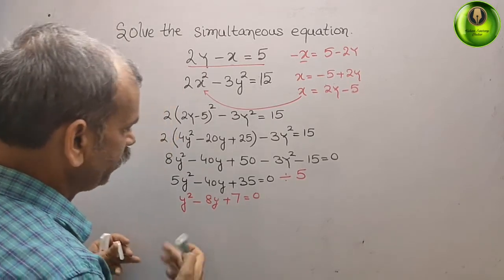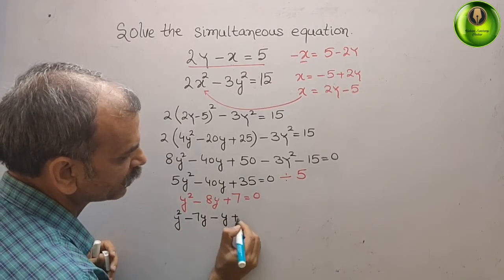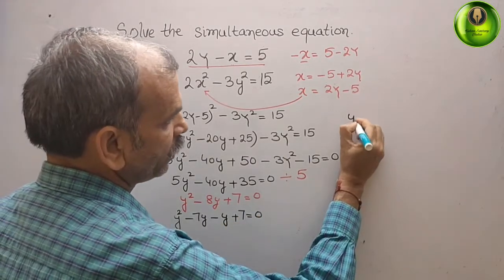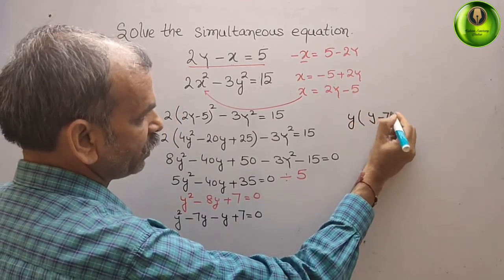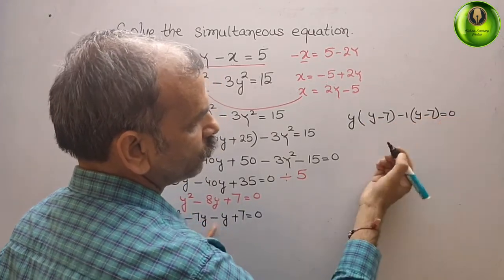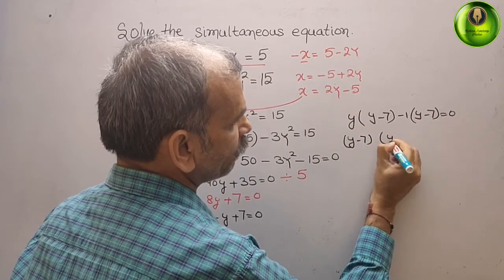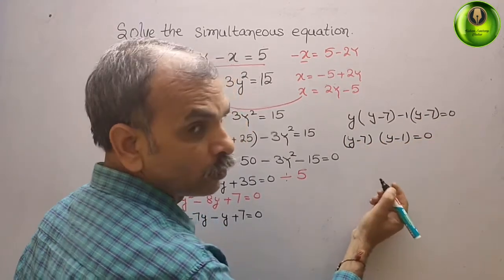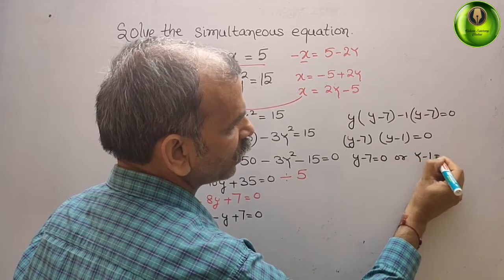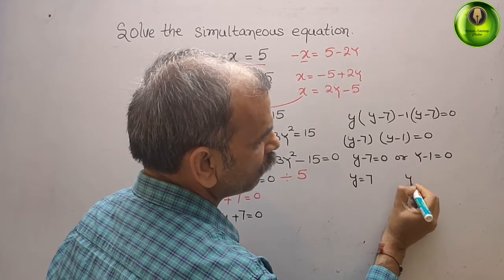Using middle term splitting: 7 times 1 gives us y squared minus 7y minus y plus 7 equals 0. Taking y common from the first pair gives y(y minus 7), and minus 1 common from the second pair gives minus 1(y minus 7) equals 0. So the two factors are (y minus 7)(y minus 1) equals 0, giving y equals 7 or y equals 1.